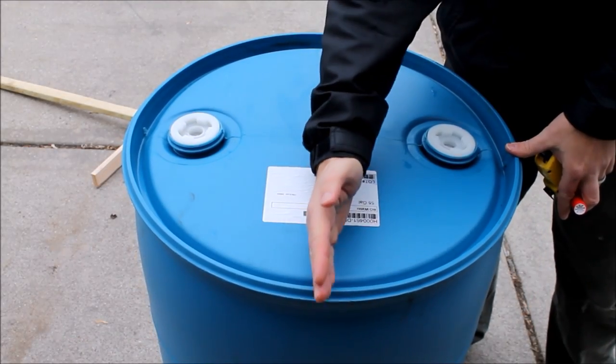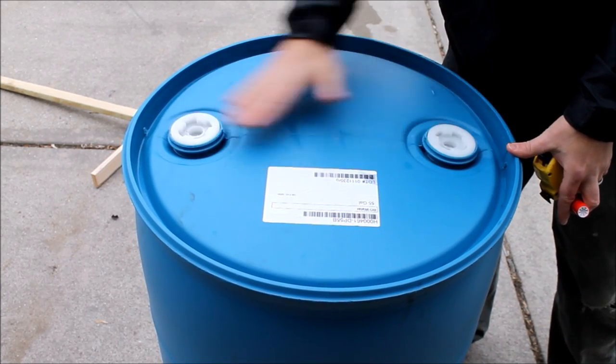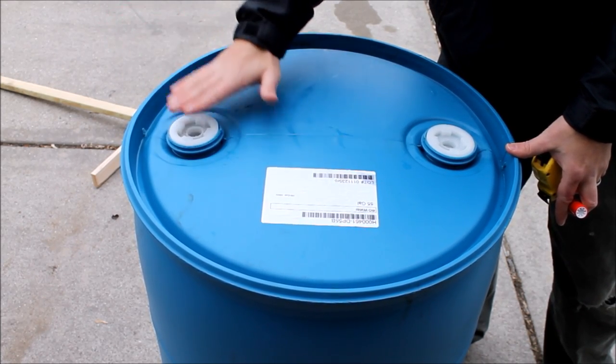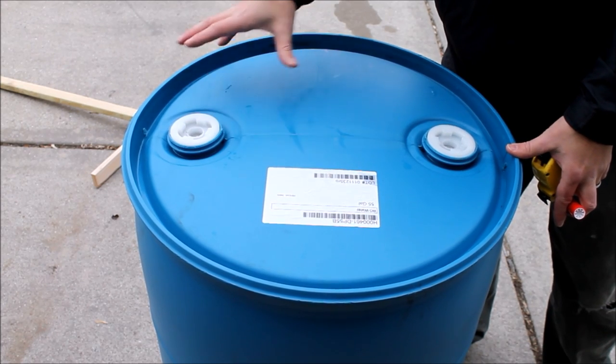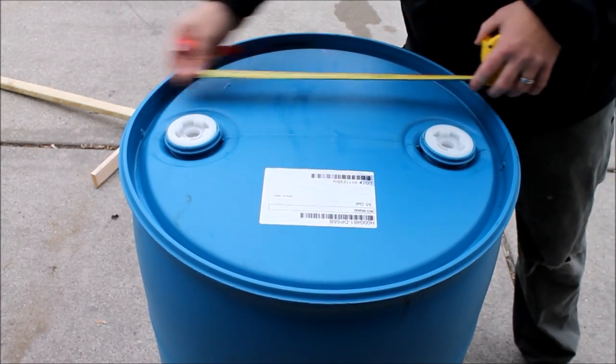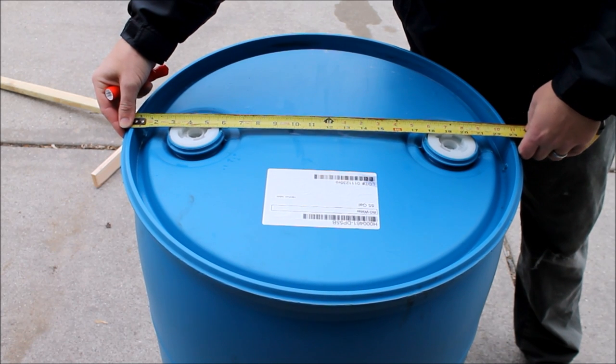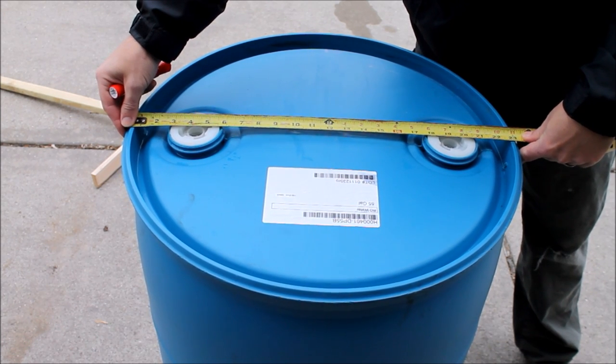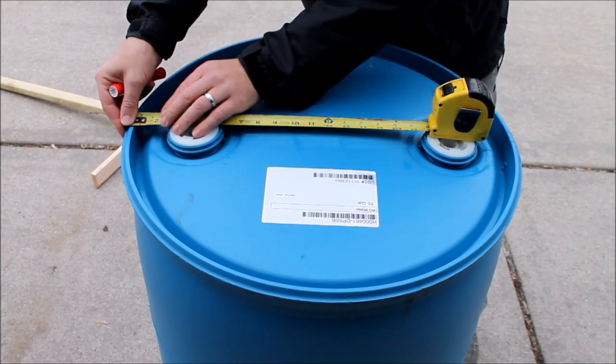The way I like to do the grow beds is I actually like to split the barrel right down the center this way. I've done them both ways, and I like to do it this way because then you have the use of both of these bungs for an external bell siphon or to drain them. We're going to measure the total distance of our barrel here right down that seam, which is 23 and a quarter. We're splitting that directly in half, so we're going to be at 11 and 5/8.